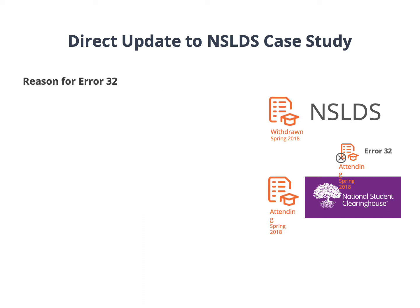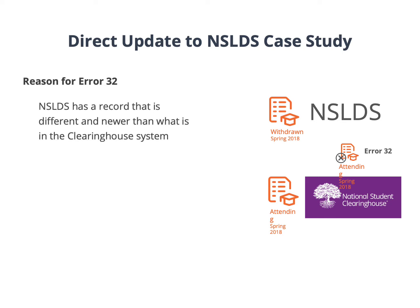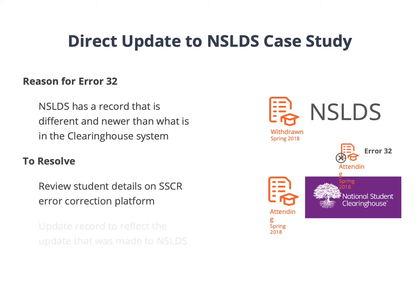So why was the Error 32 returned? Since NSLDS was updated with the withdrawn status and the clearinghouse hadn't been updated yet, NSLDS had a record that was different and newer than what was reported through the SSCR process. Since NSLDS saw this record as older, it was rejected with an Error 32. To resolve the error, review the student's record through the SSCR Error Corrections platform and make any necessary updates so that the record reflects the update that was made in NSLDS.